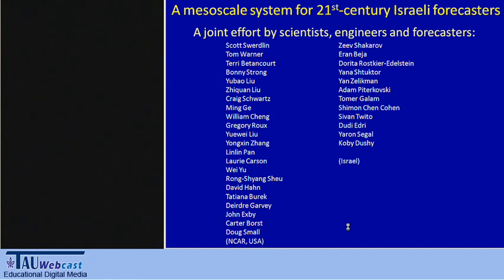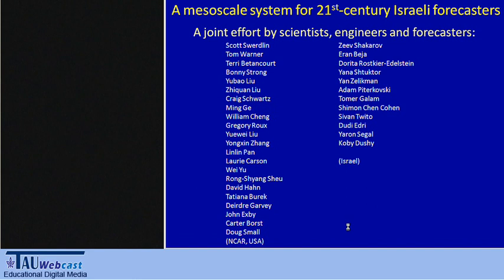This is an effort to bring a mesoscale system for the 21st century Israel forecaster. We have heard here about the history of mesoscale forecasts in Israel. This is a joint effort by scientists, engineers, and forecasters — a long list of very good people working to bring this into operations as a useful tool. Tom's group from NCAR is working very hard on it, together with people from Israel.